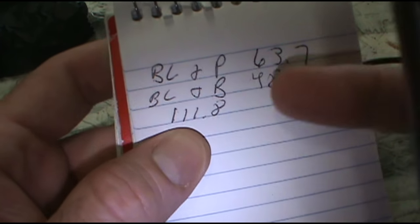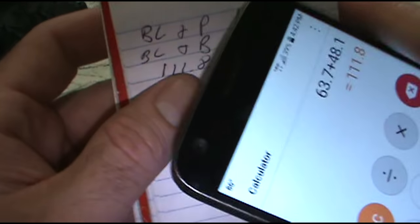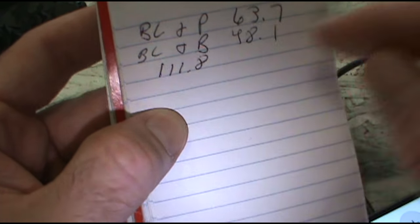All right, so you take your two numbers: the black and purple, 63.7, black and brown, 48.1, and it equals 111.8. Our purple and brown wire together ohmed out at 111.8, so this fan motor is good.